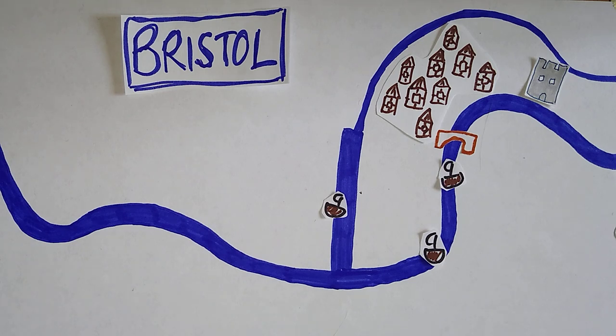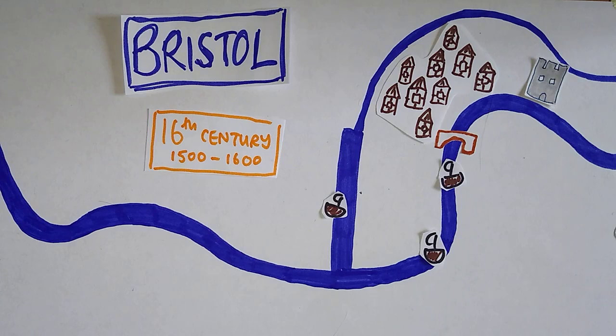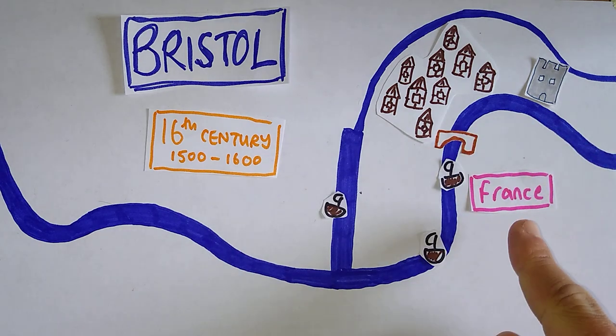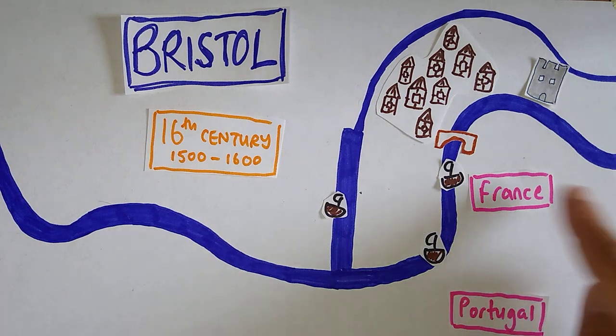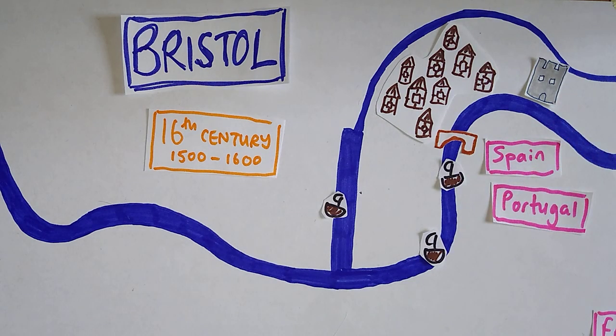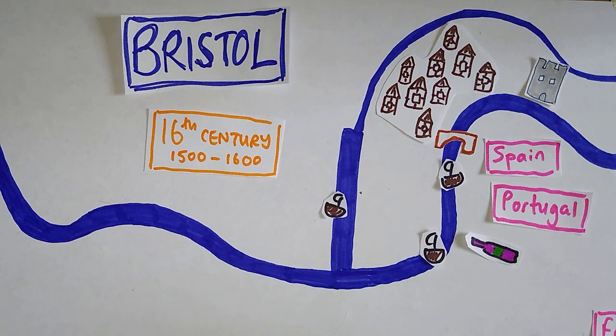Into the 16th century, and really, things aren't changing a huge amount. Bristol is still, to an extent, trading with France, although a little bit less. It's massively trading though, still, with Portugal and Spain. And in a similar way that it was before, Bristol is trading an awful lot of wine.